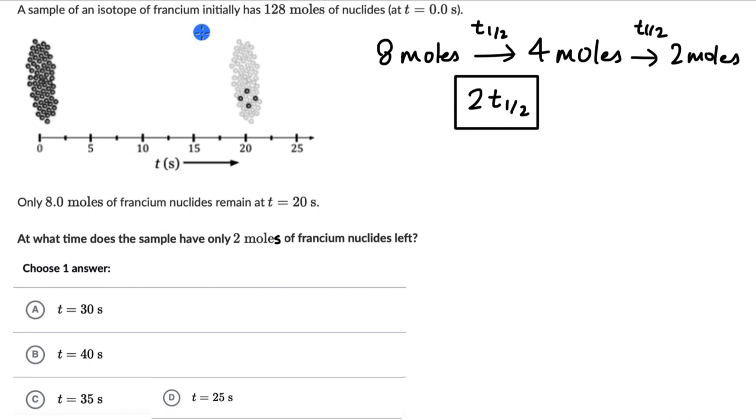So let's go back to the information that the question is providing us. We are starting with 128 moles of nucleides and then after 20 seconds we have 8 moles remaining. From this data alone we can try and find what half life is. Because we also know the time that it took for francium to go from 128 to 8 moles.